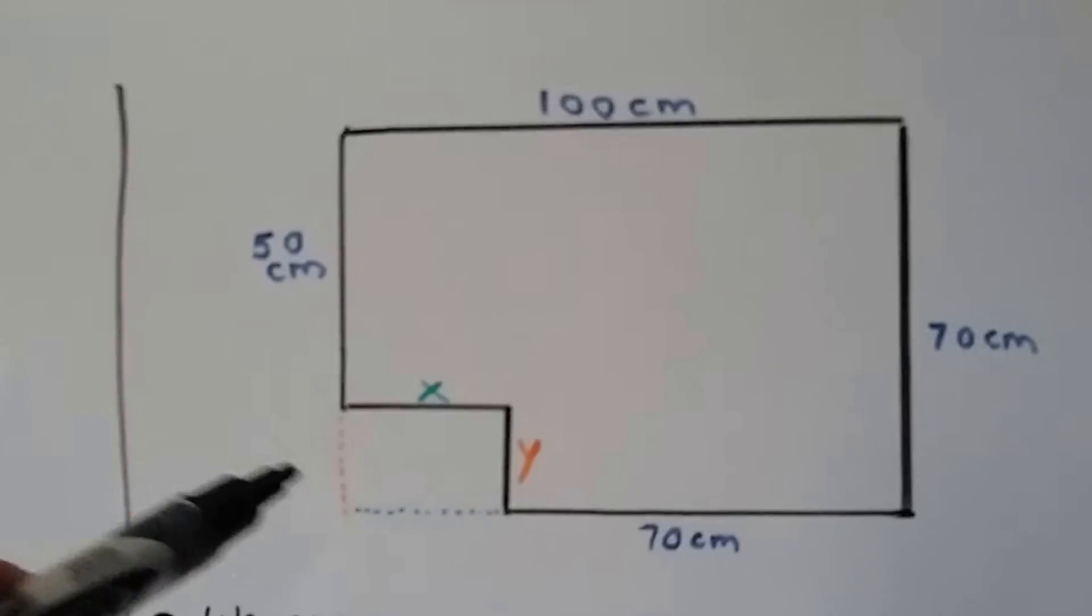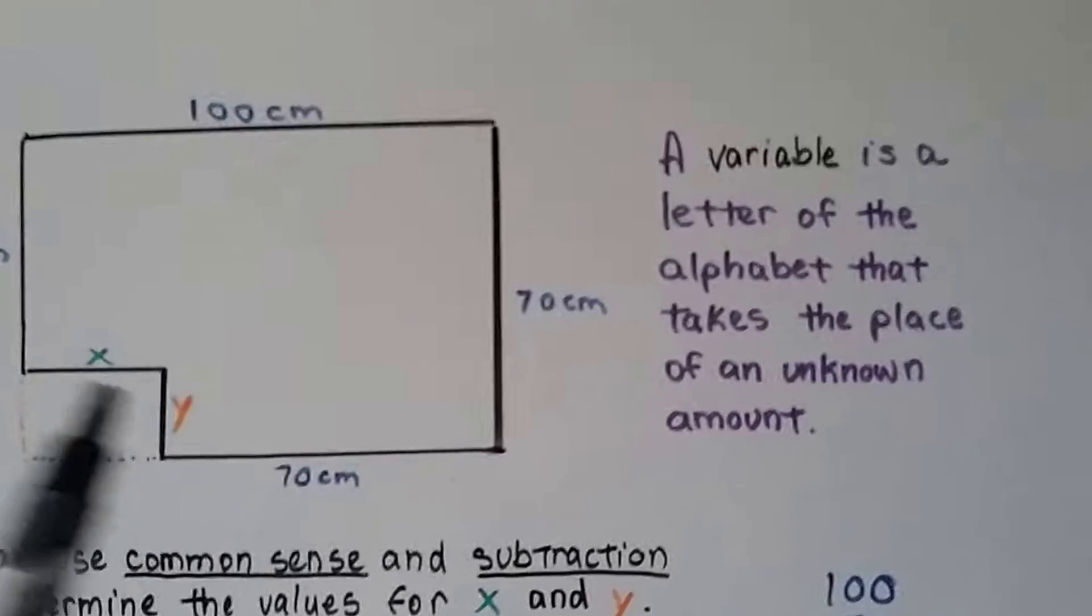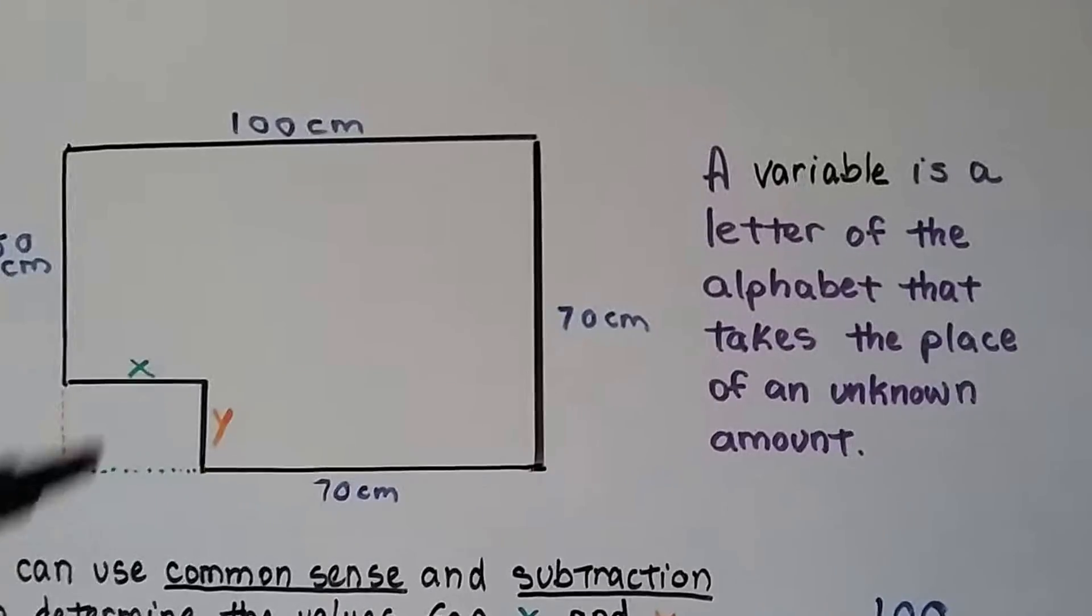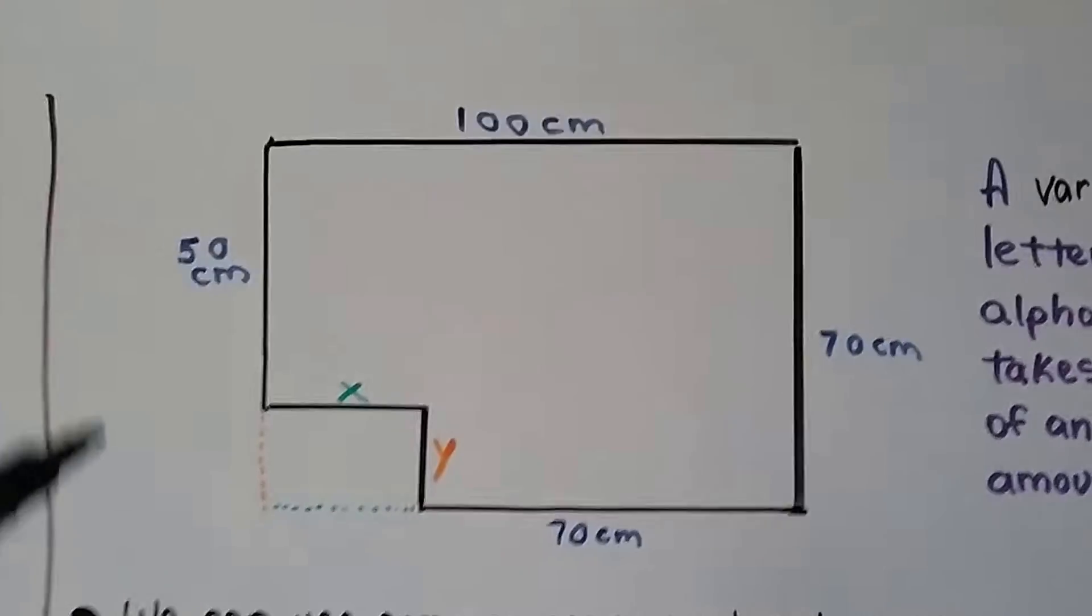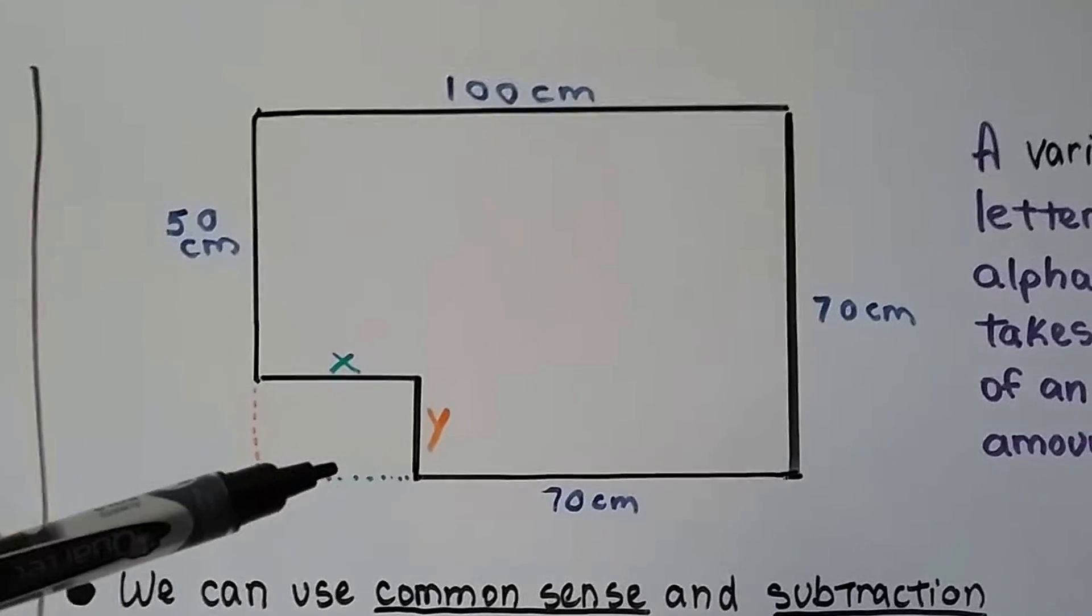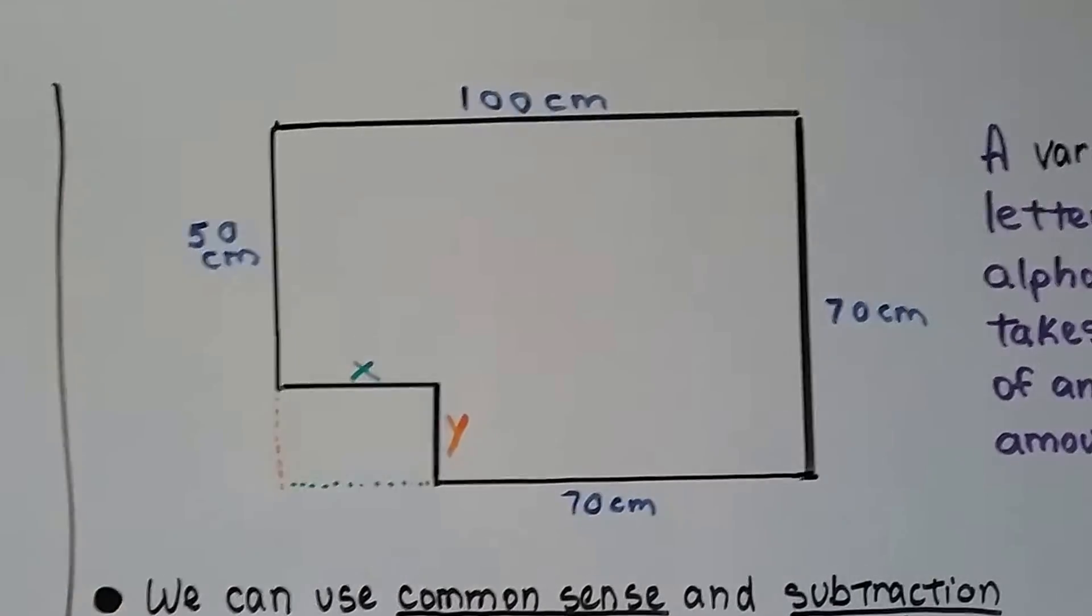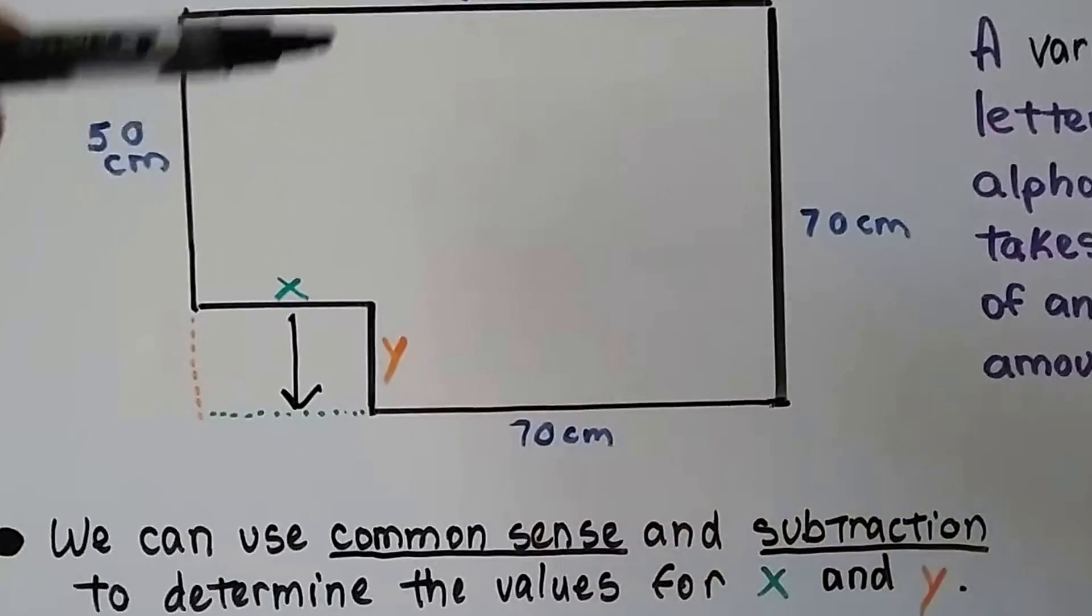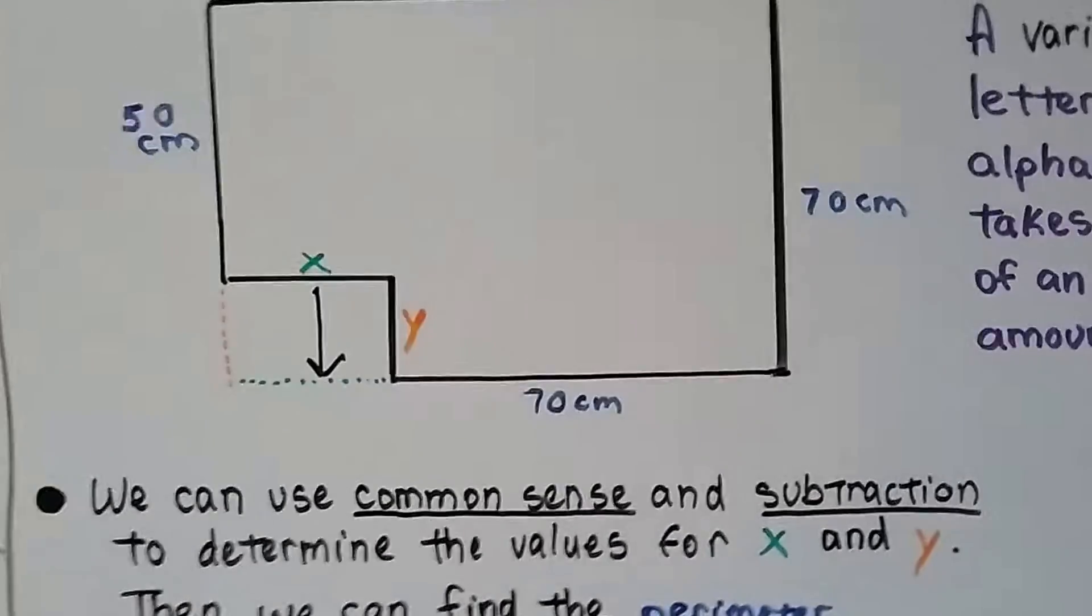So let's look at that again. Here we've got a rectangle, but this corner is missing. And it just says that this length is x, and this length is y. So I want you to remember that a variable like these, it's just a letter of the alphabet that takes the place of an unknown amount. So instead of writing a question mark, or putting an empty box like they did in second grade, we just see that it's got square corners. So if that's 100 centimeters, then this side is 100 centimeters minus this 70 would give us that x. Do you see that?